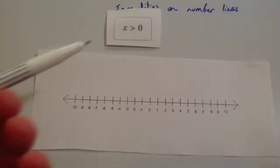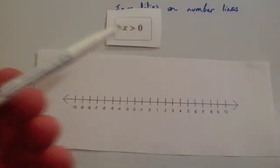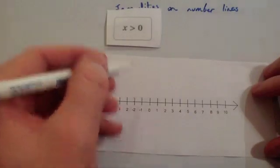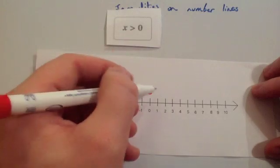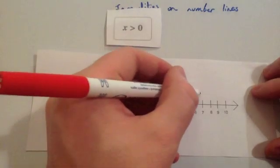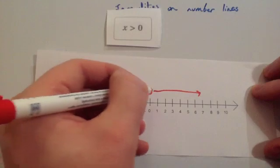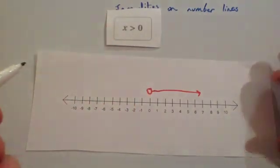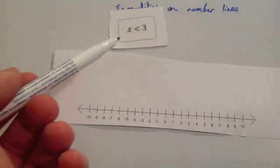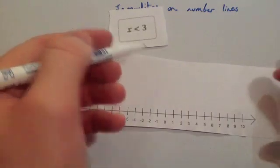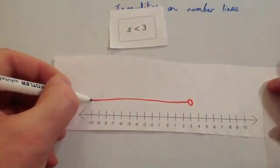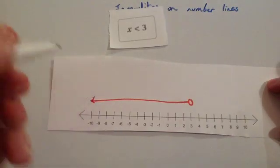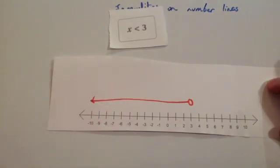This time we've been asked to draw the inequality x is larger than 0. So you go to 0, and because it's just larger than, you do a hollow circle. And because it's larger than, you go to the right. Next, we've been asked to do the inequality x is smaller than 3. So you go to 3, it's just smaller than, so you do a hollow circle at 3. And smaller than means it's going to the left. So this is x is smaller than 3, or less than 3.